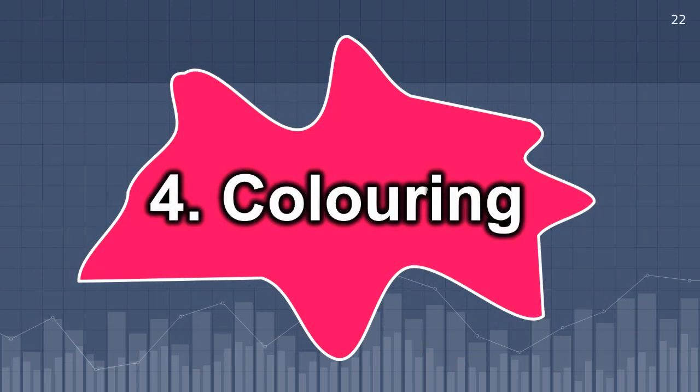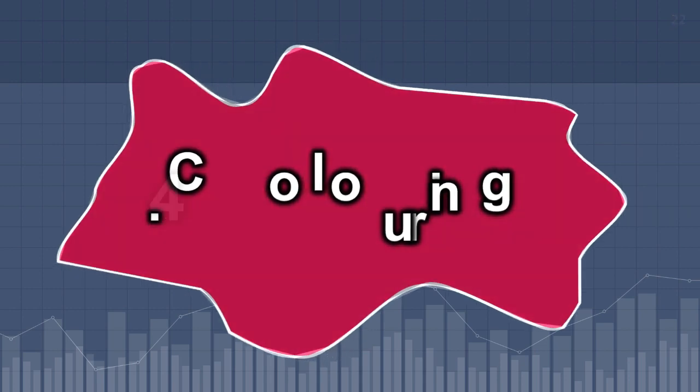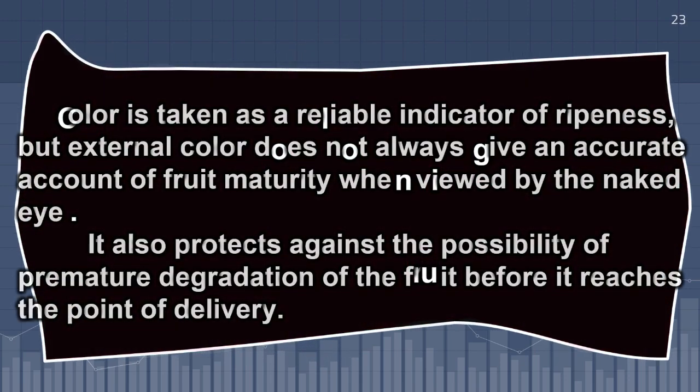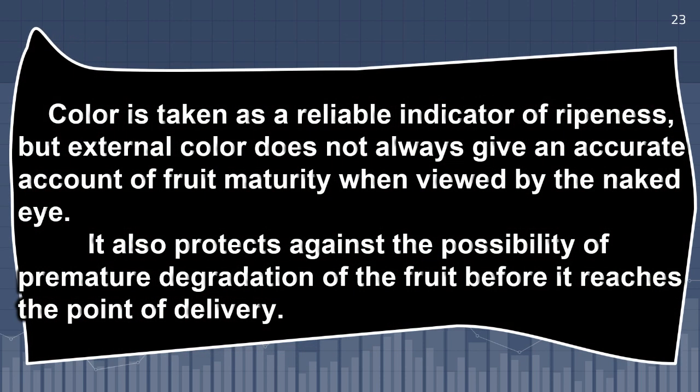Color: Color is taken as a reliable indicator of ripeness, but external color does not always give an accurate account of fruit maturity when viewed by the naked eye. It also protects against the possibility of premature degradation of the fruit before it reaches the point of delivery.